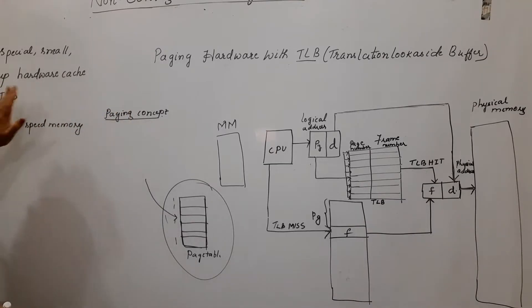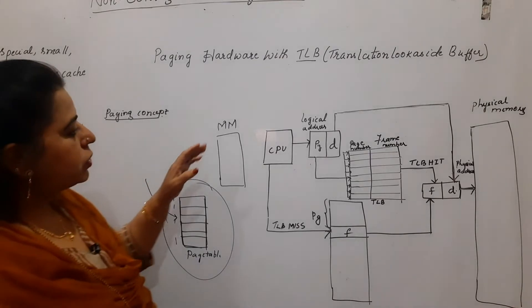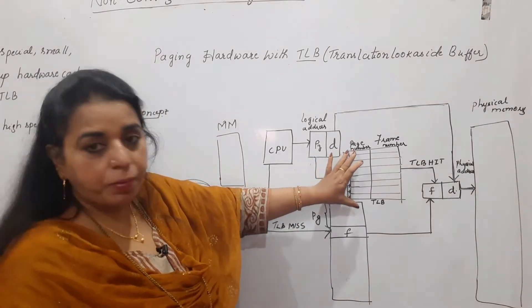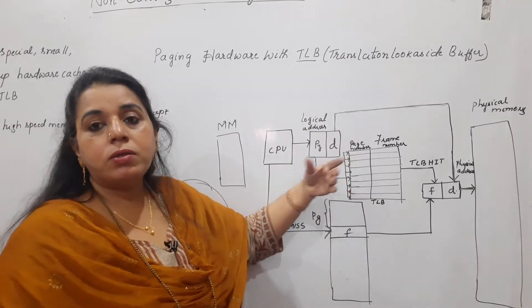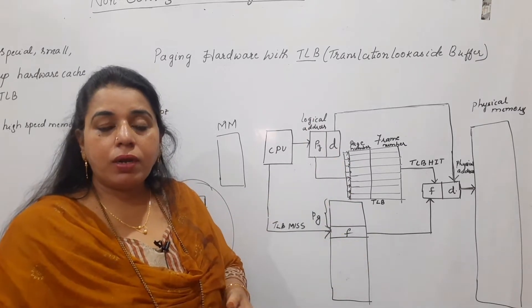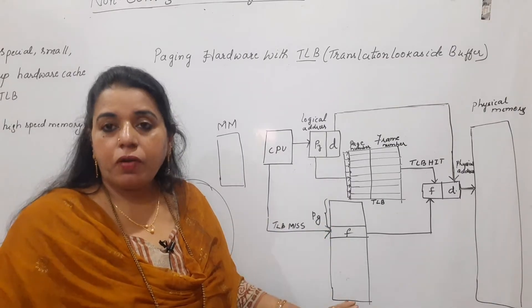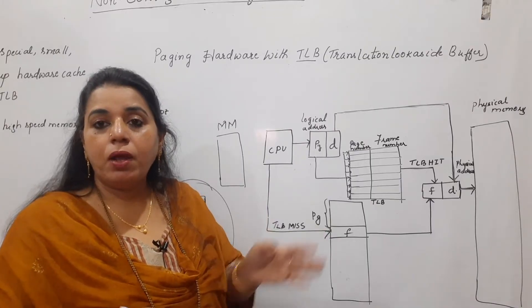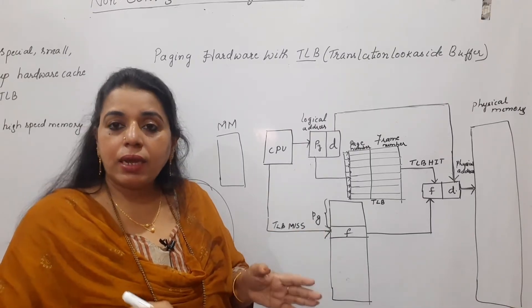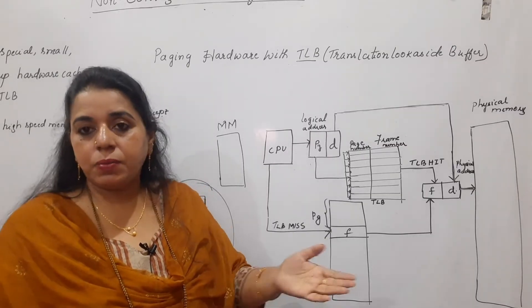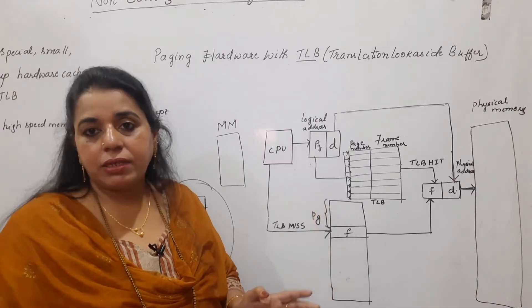TLB is a special, small, fast lookup hardware cache — it is associative high-speed memory. It can store information like a page table, but the difference is that a page table has more entries, whereas the TLB is very small and holds fewer entries. The fewer the entries in a cache, the faster the access — as we have learned in previous sessions.